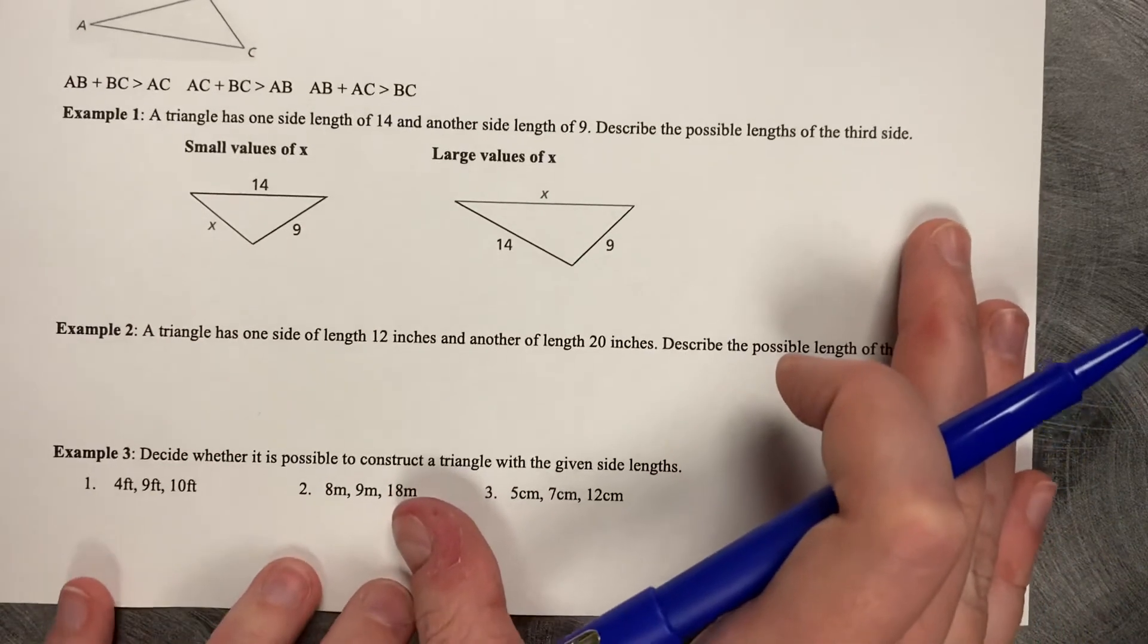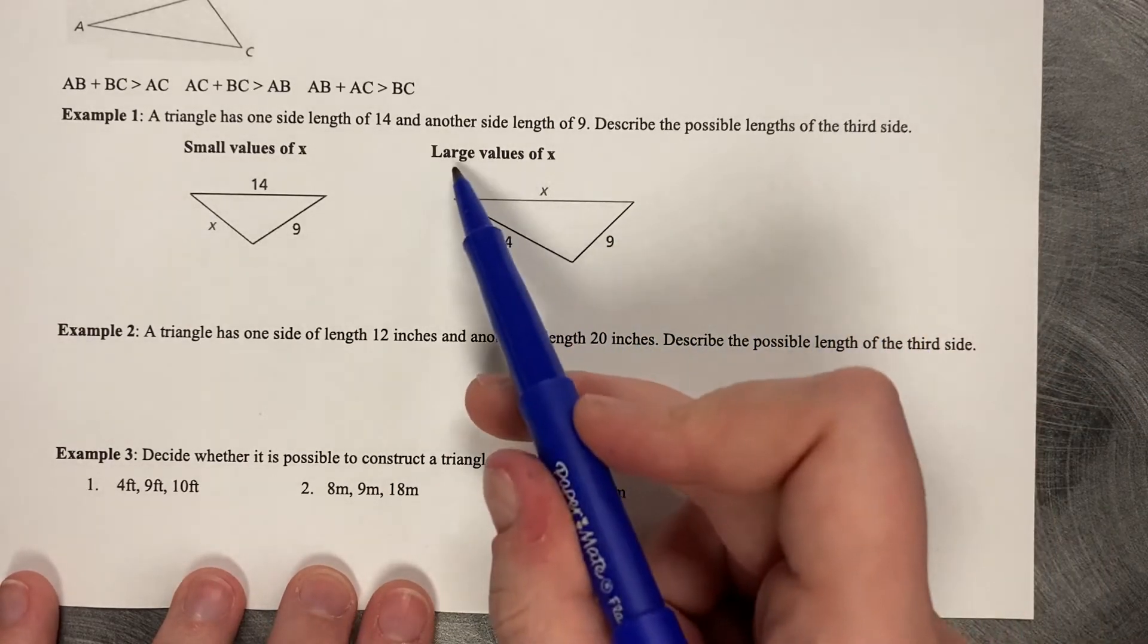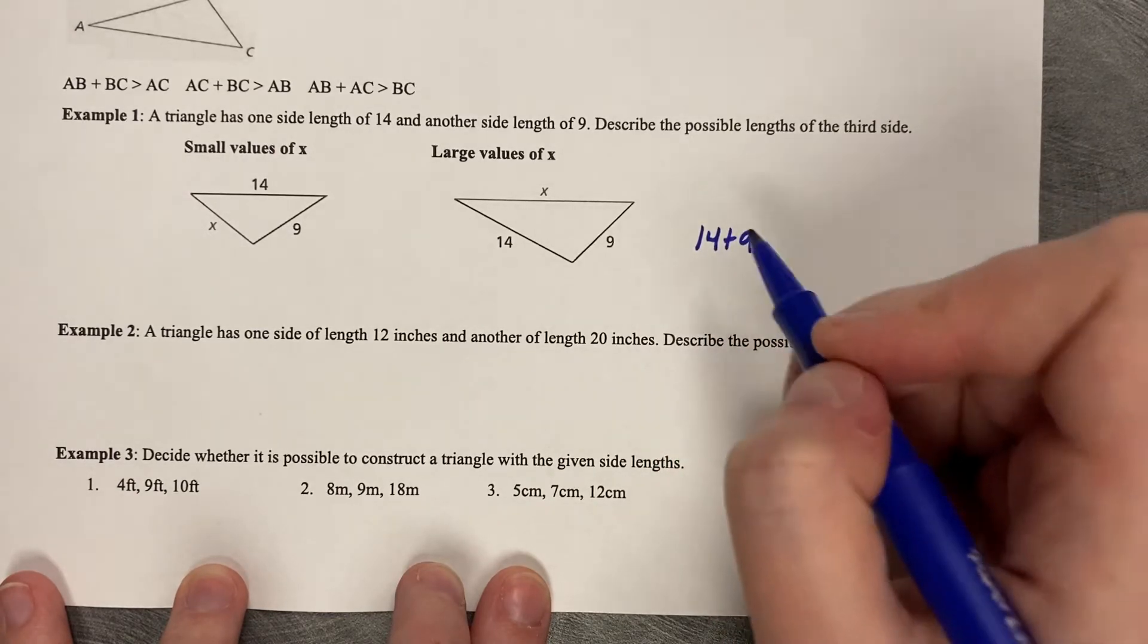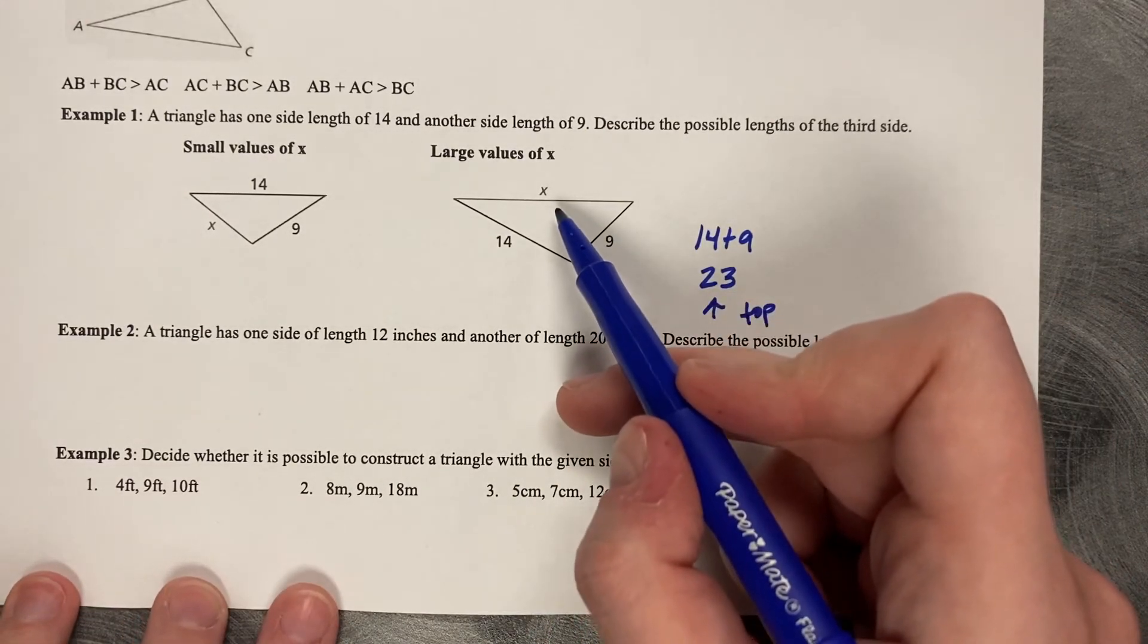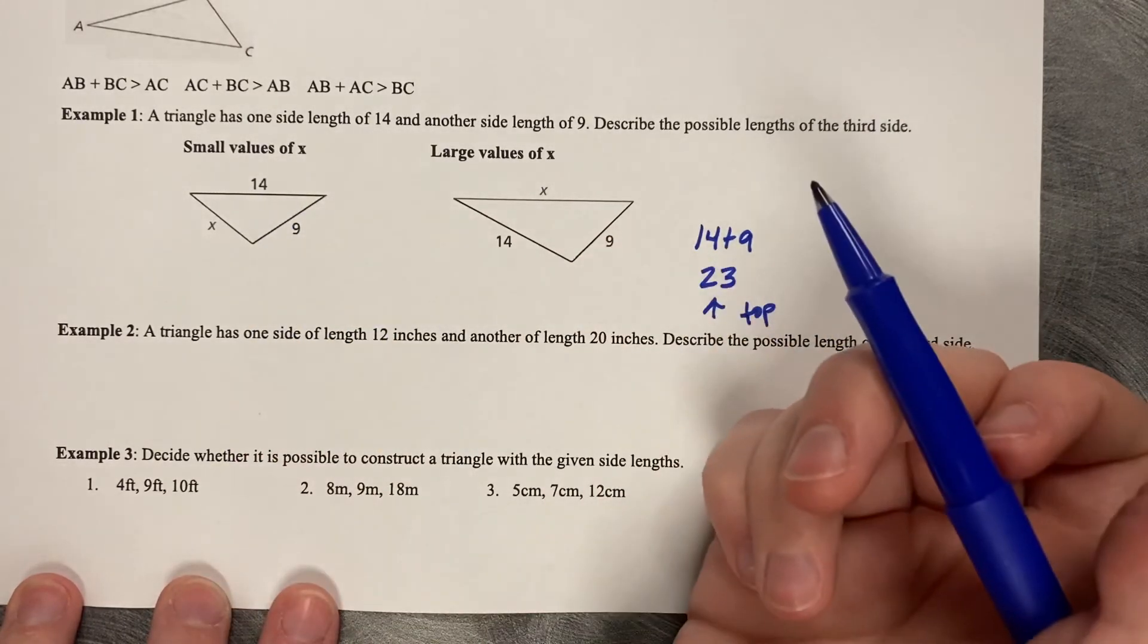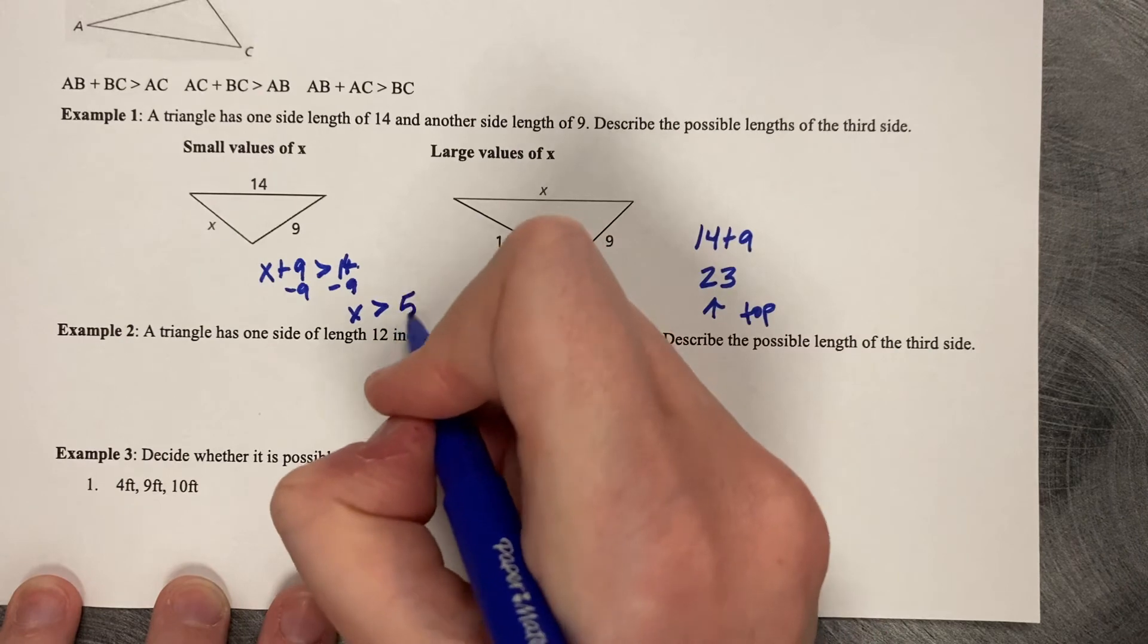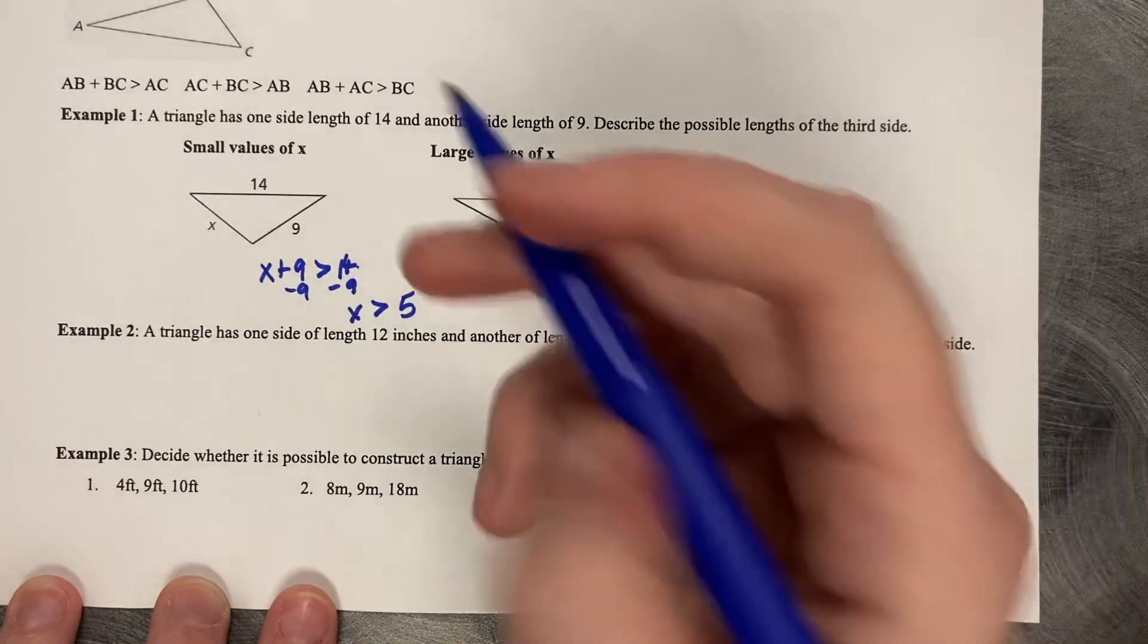So let's try some examples. Example number 1. A triangle has one side length of 14 and another side length of 9. Describe the possible lengths of the third side. So let's start with this second one. Large values of x. So 14 and 9 and x. So what can that third side length be? The way that you get that is you add them together. So 14 plus 9 is 23. So this is our top end. This is the top value that it can be. But if you want to go the other direction, what number with 9 is going to make it so that 14, so that that sum is greater than 14? So we can write a little mathematical statement. x plus 9 needs to be greater than 14. Minus 9. So x must be greater than 5. So think about that. 9 plus 5 is going to be 14.